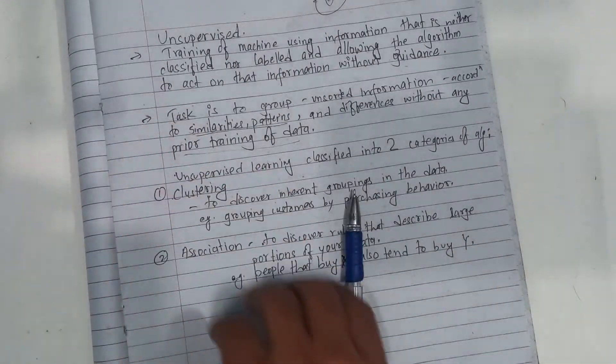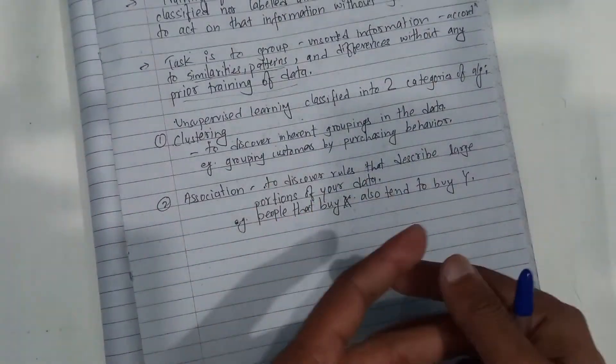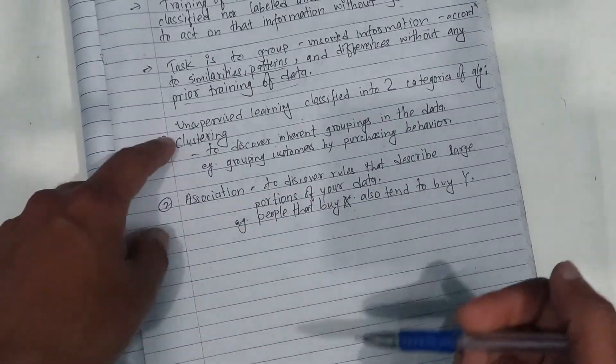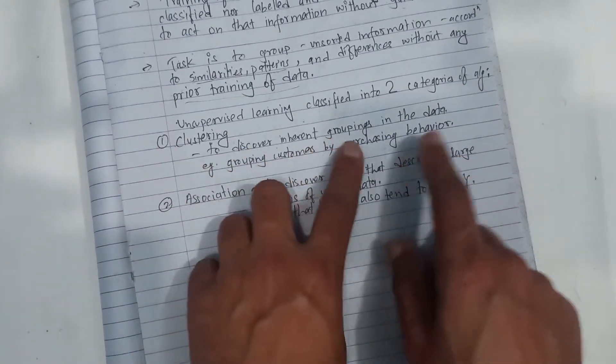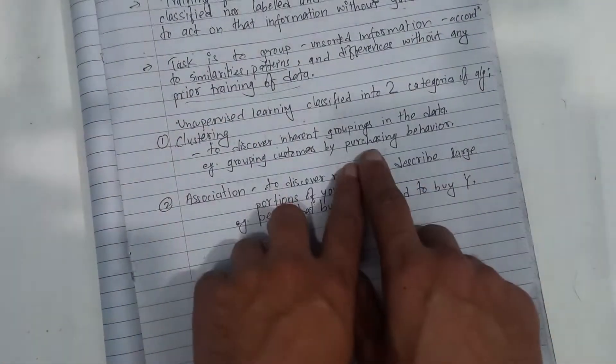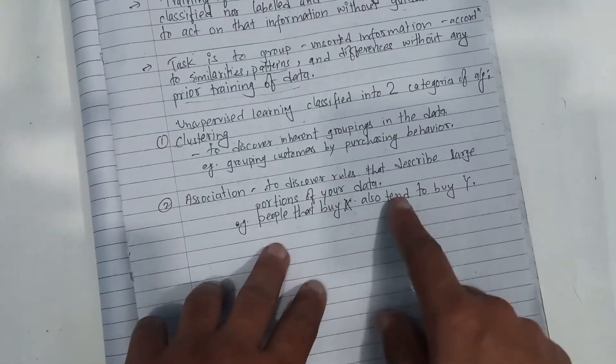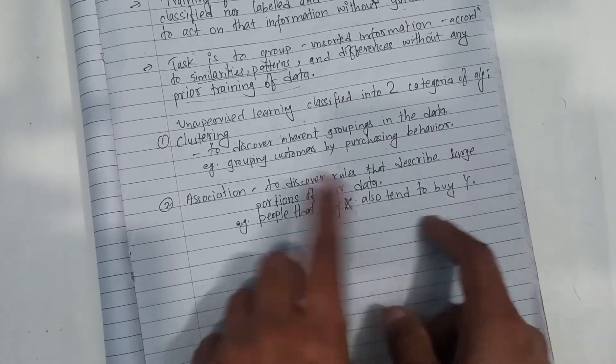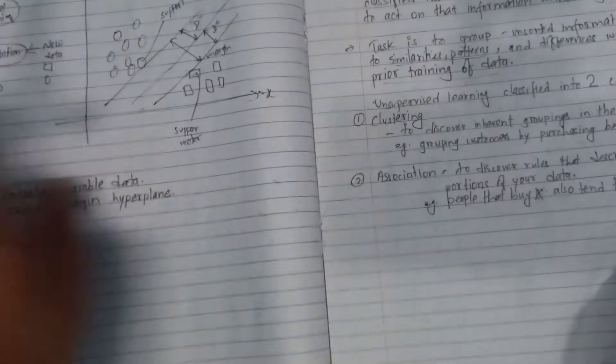Unsupervised learning has two class categories: clustering and association. Clustering is to discover inherent grouping in the data, like grouping customers by purchasing behavior. Association is to discover rules that describe large portions of your data, like people that buy X also tend to buy Y.